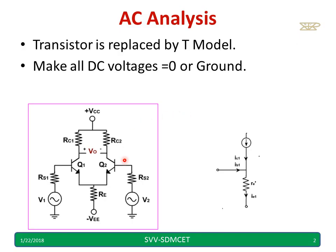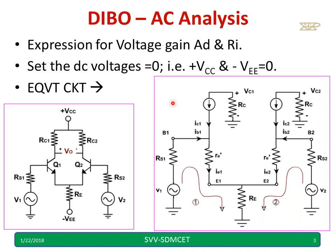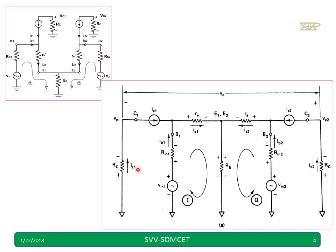Now after replacing the T model for Q1 transistor and Q2 transistor and making all DC voltages equal to 0, we get this particular circuit. And the same circuit, we are rewriting like this, which is already discussed in the video where we have discussed gain equation.